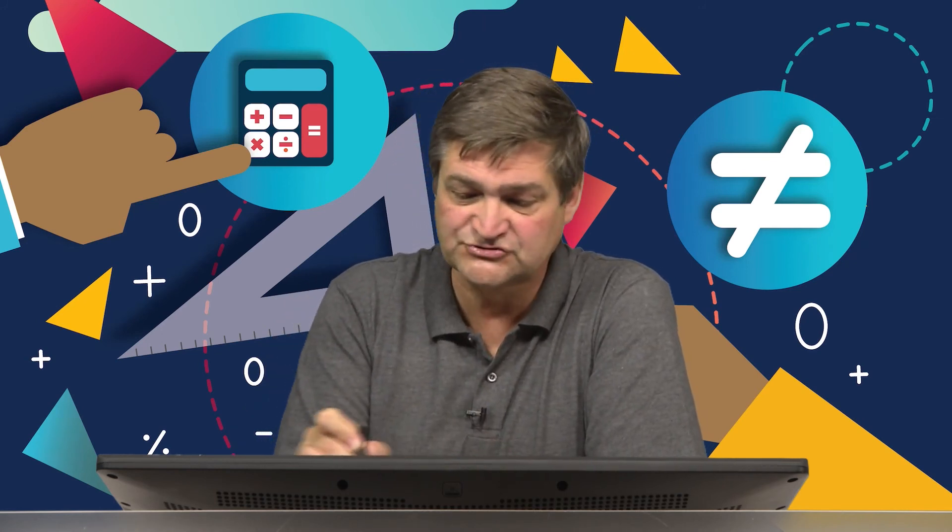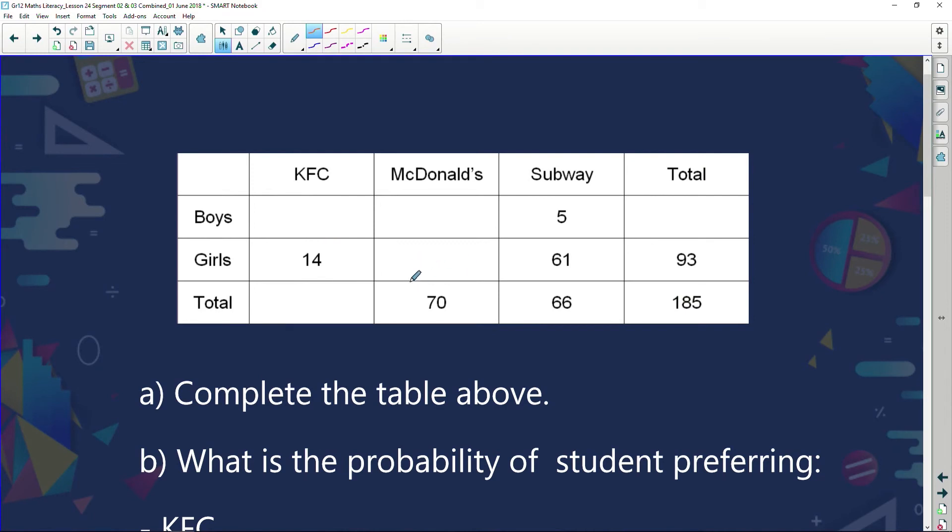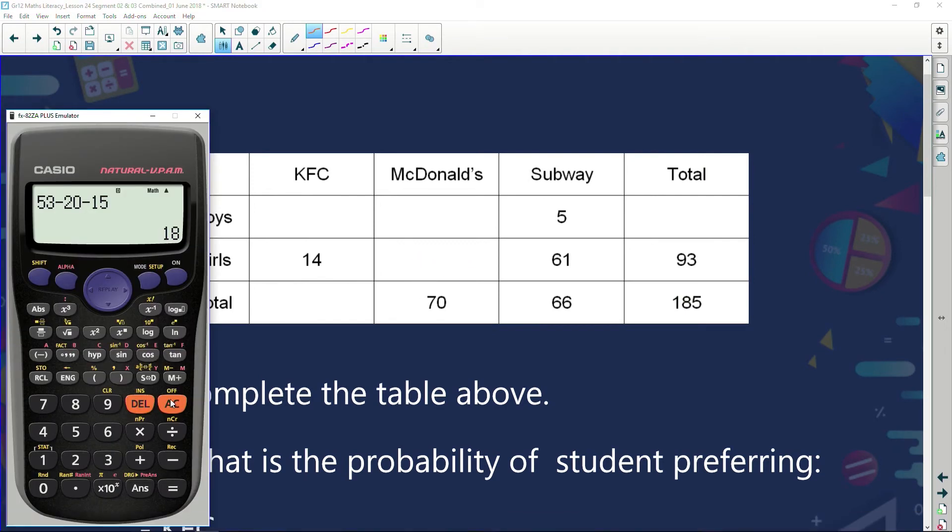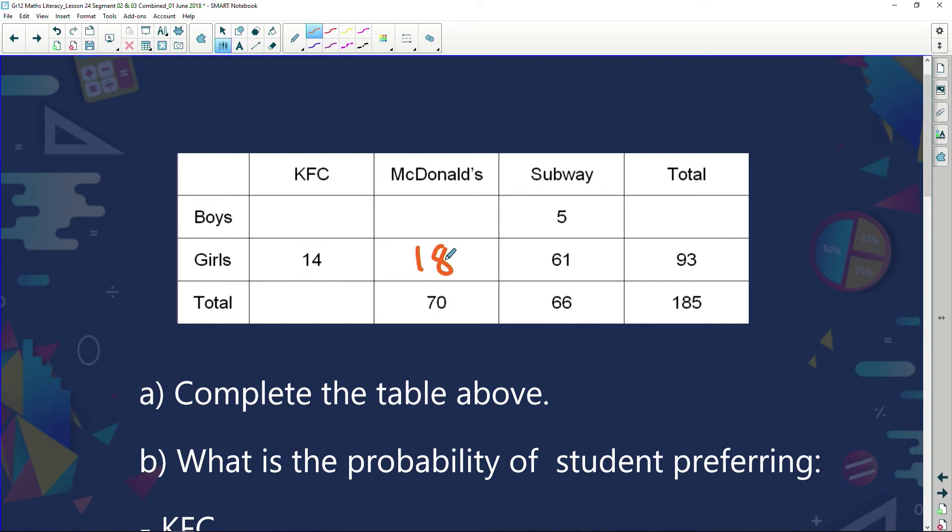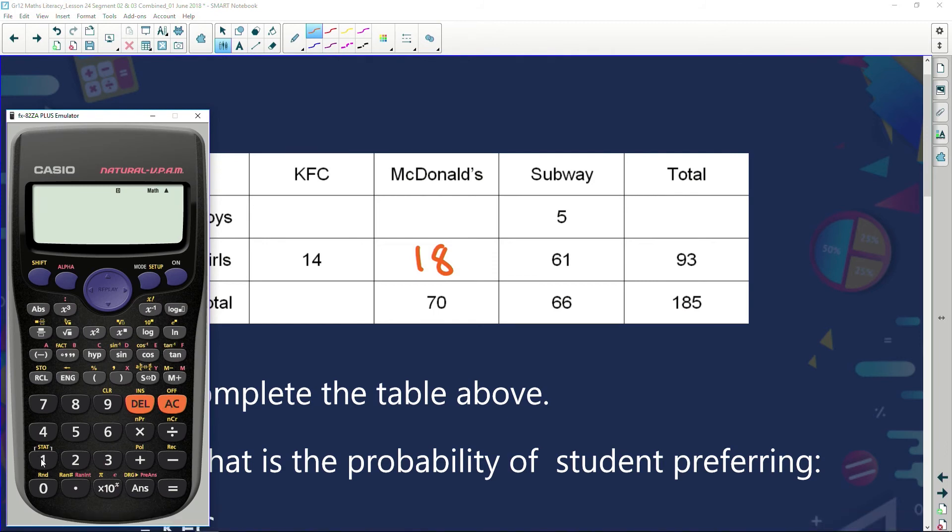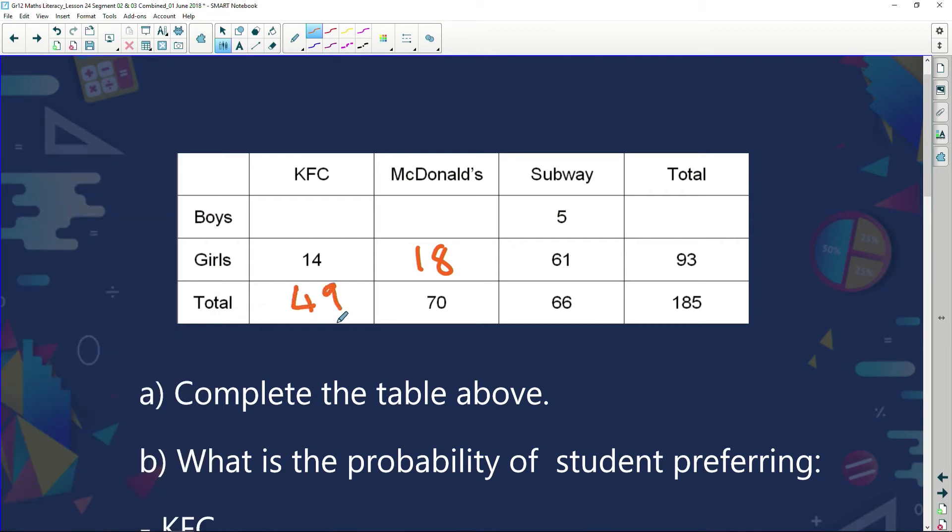That row, I've got my first row—three missing bits. Second row, only one missing bit. So we take out our calculator and we say, right, we know we questioned 93 girls in total. Of that, 61 loved Subway. Of that, 14 liked KFC, which means 18 girls liked McDonald's. This row we can complete because there's only one missing. So when we look at that, we can see we had a total of 185 boys and girls we questioned, of which a total of 66 loved Subway, a total of 70 loved McDonald's, which means a total of 49 preferred KFC.